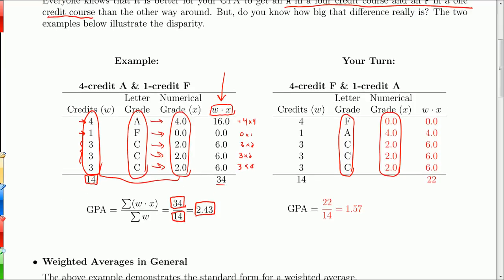All right, so then you take each weight, multiply it by the numerical grade, and put that value here. Right? W times X. Weight times the actual score. So 4 times 0 is 0. 1 times 4 is 4. 3 times 2 is 6. 3 times 2 again. 3 times 2 again. And when you add all those up, you get 22. So the top part of the fraction is 22. You actually have the same number of credits of 14. And so your GPA is 1.57.